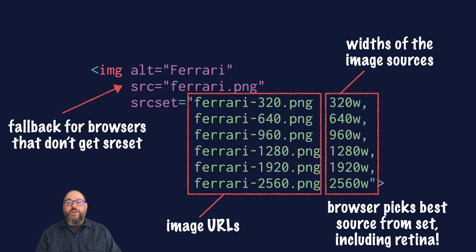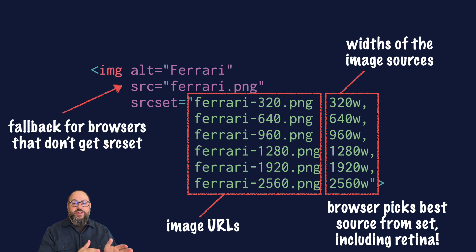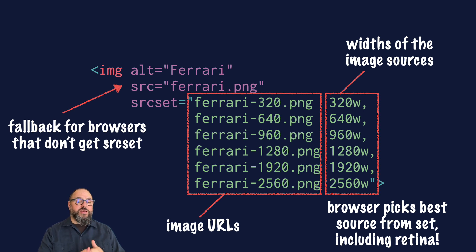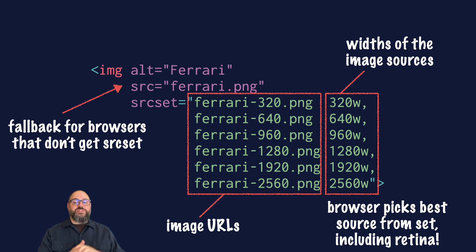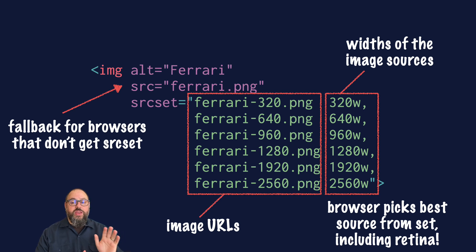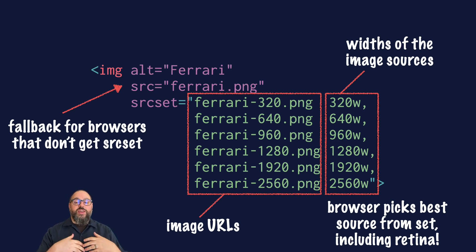Now, you may have noticed we still have a source attribute. If you provide a srcset attribute, modern browsers will replace the source value in the DOM with the image selected from the srcset. So modern browsers will ignore the value you specify in the source attribute in favor of srcset. But source is still important for browsers that don't support responsive images. These older browsers will ignore the srcset and sizes attributes because they can't understand them. However, they do understand the source attribute, so you can provide a single image as fallback. I usually pick the smallest image that will still look good on a non-retina desktop monitor.